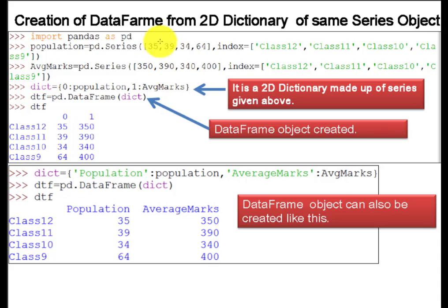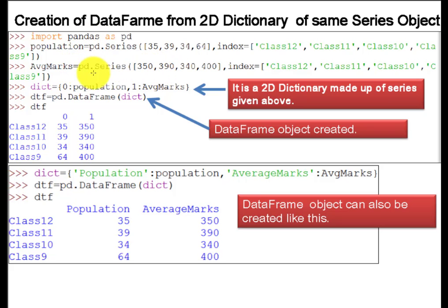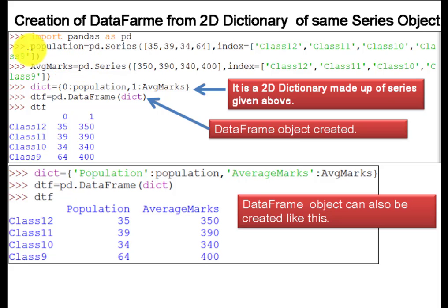Here is an example. With this example, you can easily understand how to create the series object. First, I will create the series and that series will be converted into the DataFrame. You can see here population and average marks — these two series have been created.